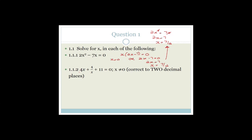The next question, 1.1.2: 4x plus 4 over x plus 11 equals zero, and they want the answer correct to two decimal places. As soon as you see 'correct to two decimal places', that means you're going to use the quadratic formula. The formula is on your formula sheet: x equals negative b plus or minus the square root of b squared minus 4ac, all over 2a. There's no excuse to get that formula incorrect.